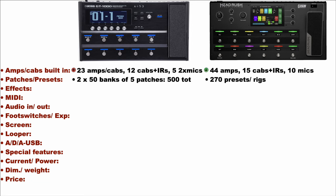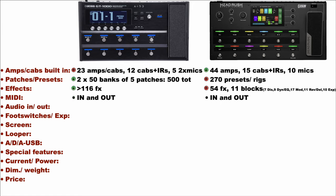The Boss has 2 sets of 50 banks, each of 5 patches, with a total of 500 patches — 250 for the user and 250 built in. The Headrush has 270 presets or rigs, so the Boss is the winner here. As regards effects, the Boss has more than 116 effects while the Headrush has 54 effects. For both of them you can use many effects simultaneously — the limit is your imagination and the DSP power. I would give a thumbs up to the Boss as it offers more effects.